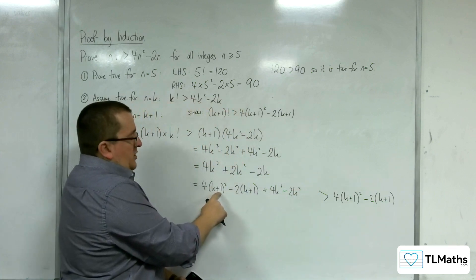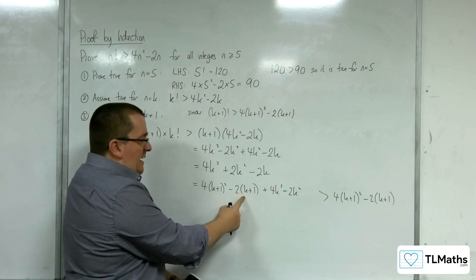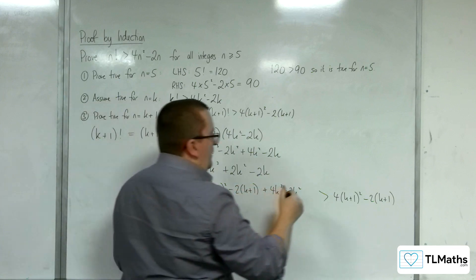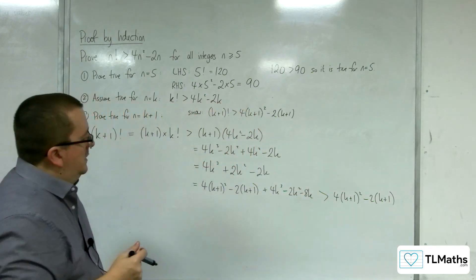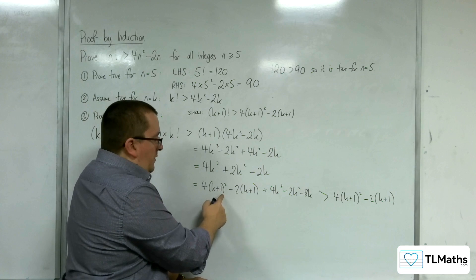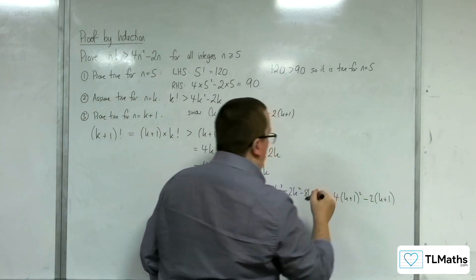I'm going to get an 8k from there, take away 2k, so 6k, but I want minus 2k, so I'm going to have to take away 8k. And I've also got 4 lots of 1, so 4, take away 2, which is 2, so I need to subtract 2 as well.